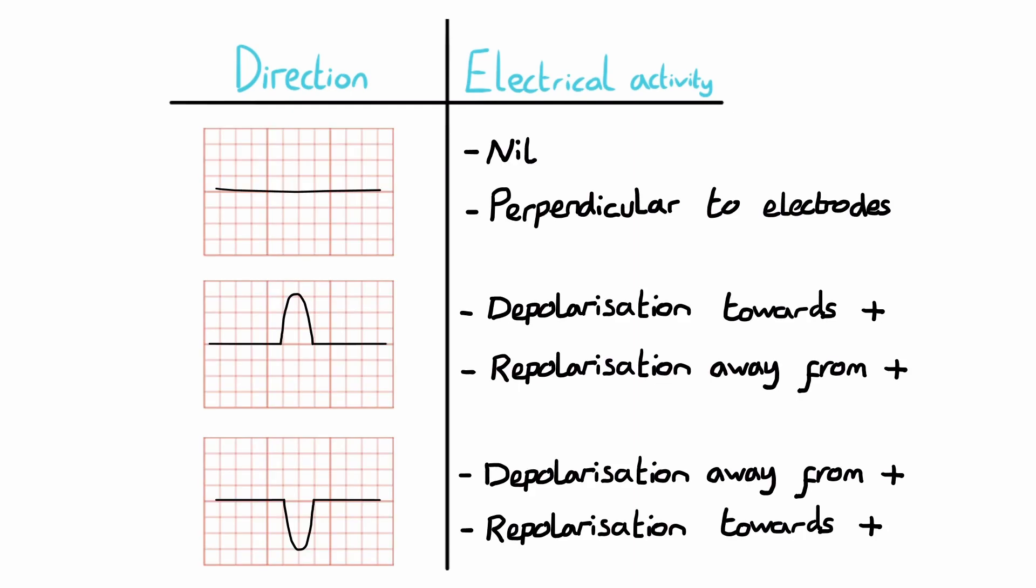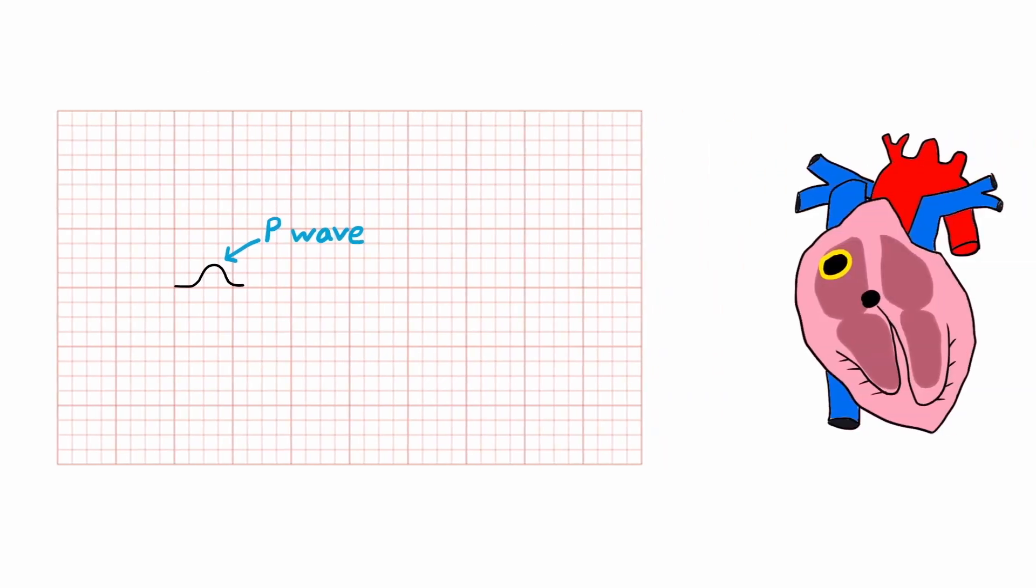Here's a table to quickly recap those directions. This is all going to make more sense as we go on to look at the components of a normal ECG complex. A single ECG complex is essentially a sum of all of the electrical activity that makes up a single heartbeat.